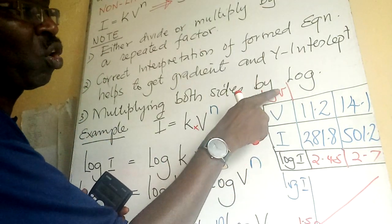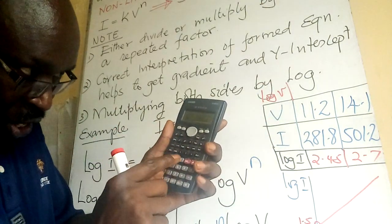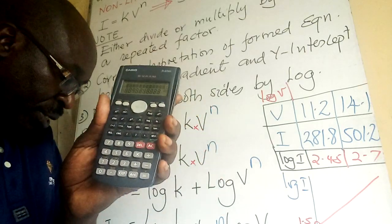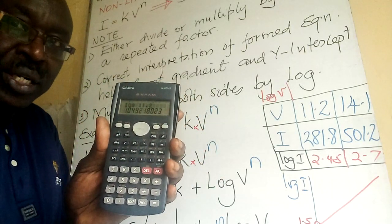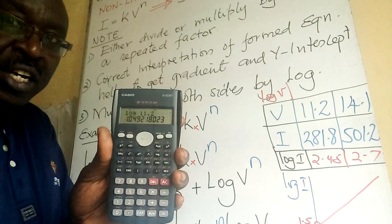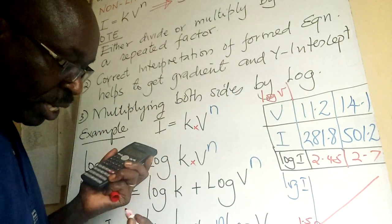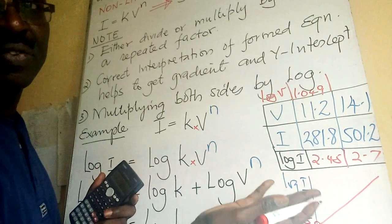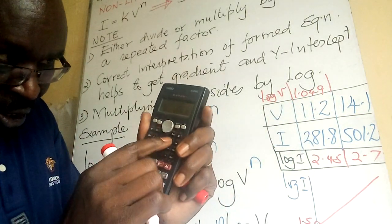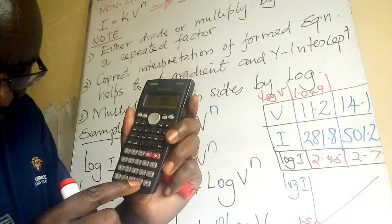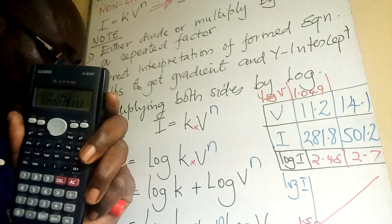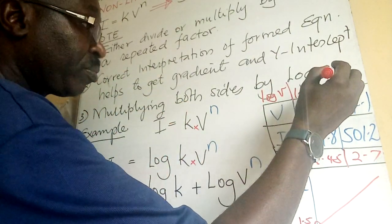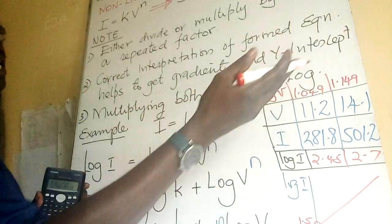I also have to get the log v values. Log of 11.2 gives 1.0492, so I write 1.0492 — or just four significant figures — in the log v column. Then log of 14.1 gives 1.1492. Maintain four significant figures throughout.